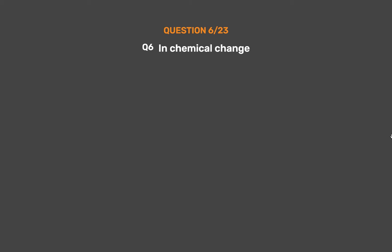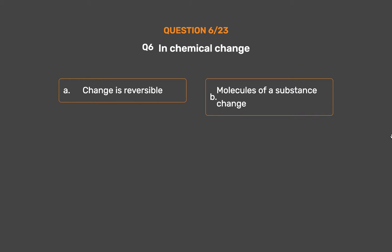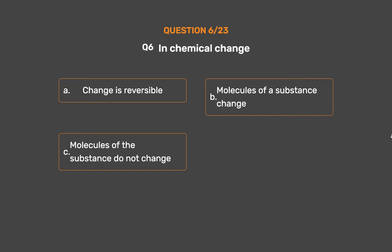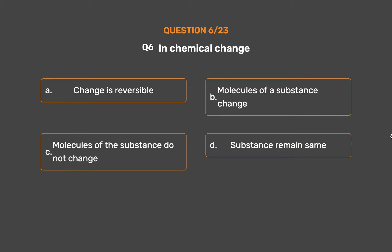Question number 6. In chemical change — Option A: Change is reversible. Option B: Molecules of a substance change. Option C: Molecules of the substance do not change. Option D: Substance remains the same.